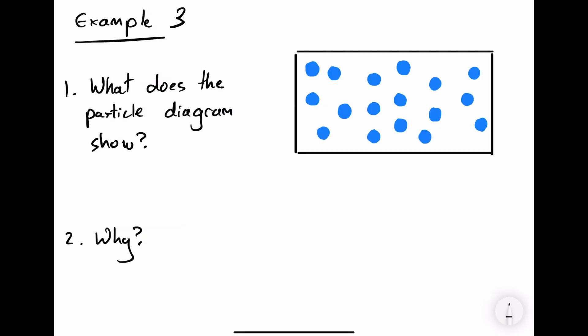Here is example three. What does the particle diagram show? The particle diagram shows an element. Why? Because there's only one type of atom.